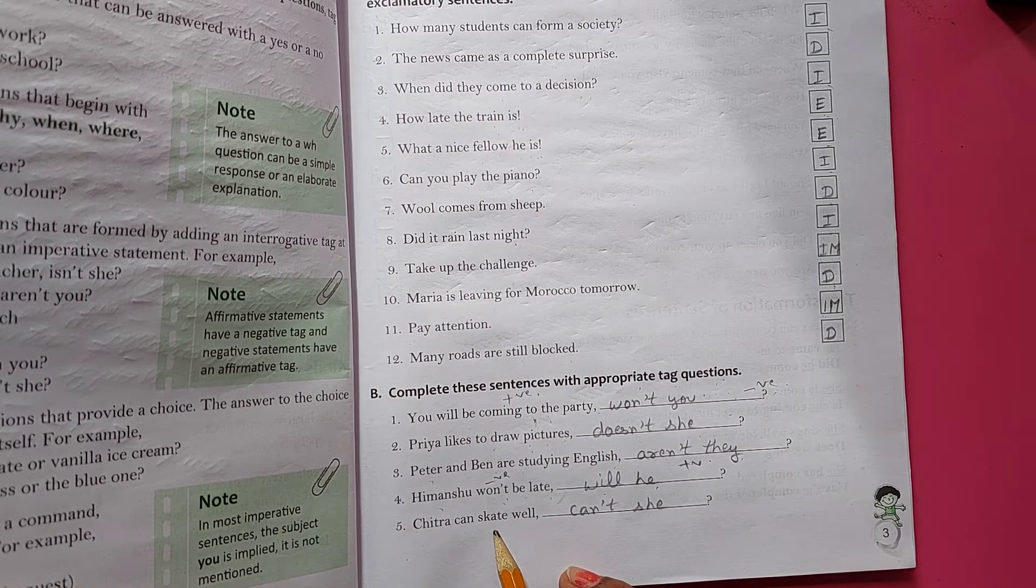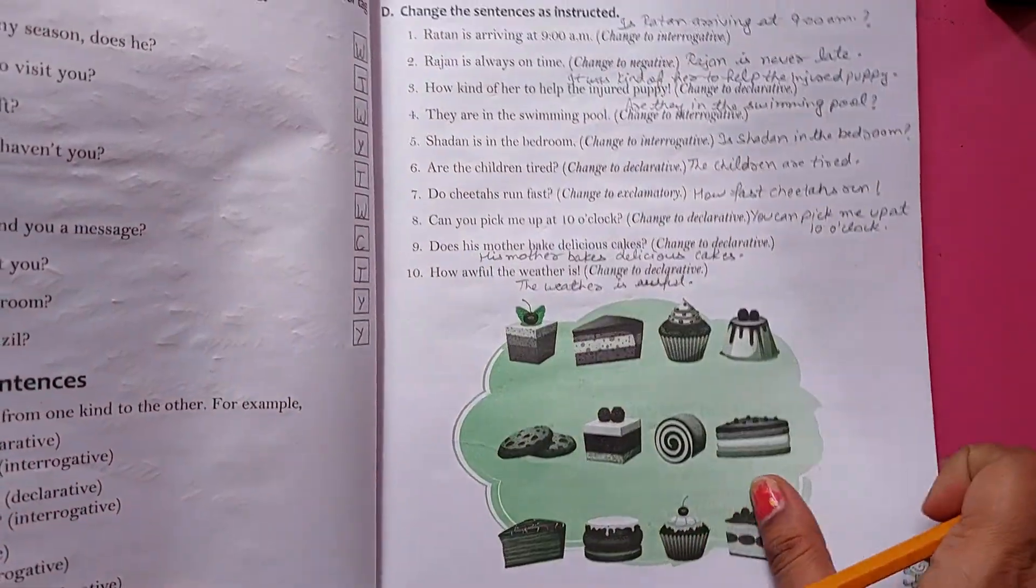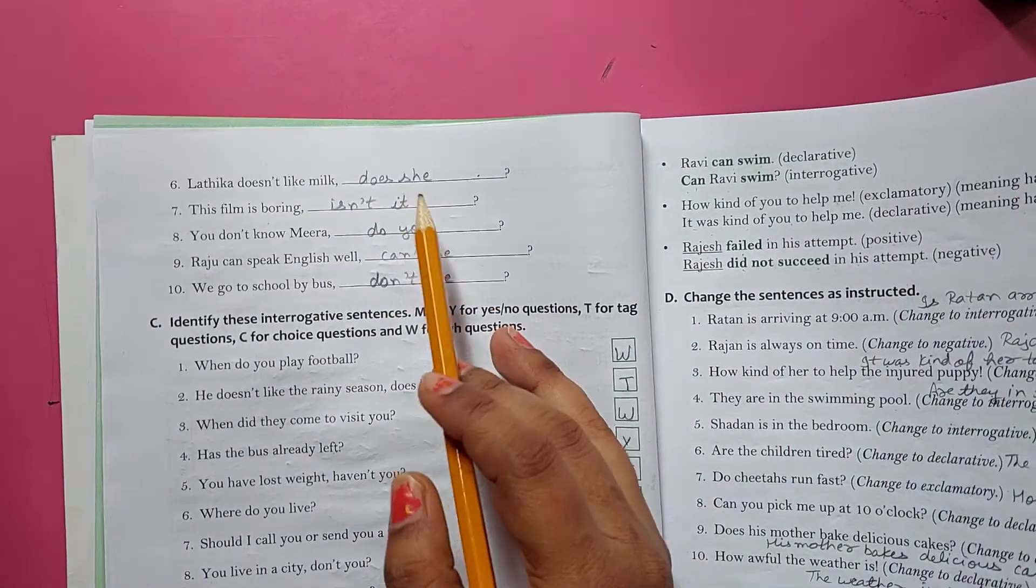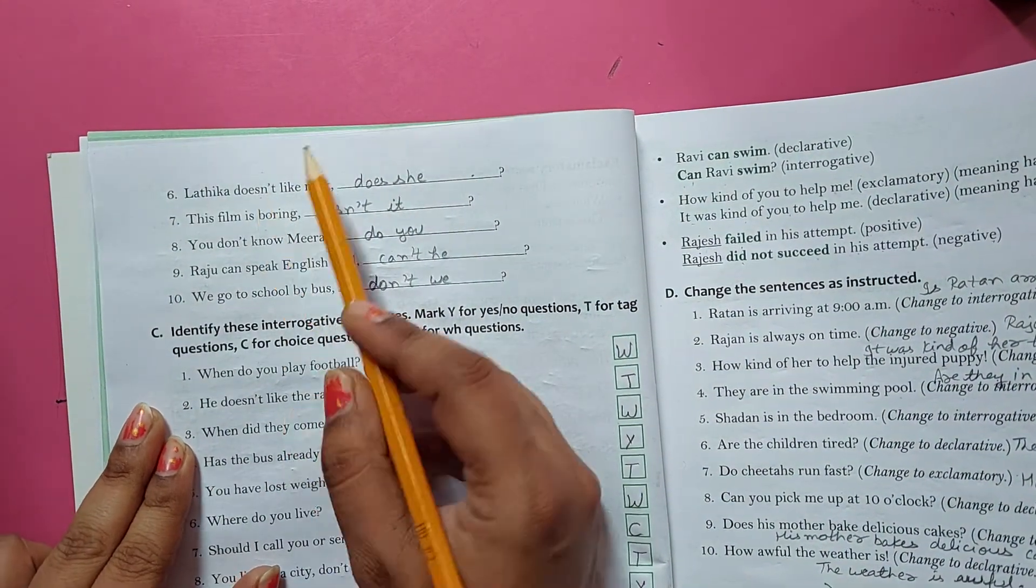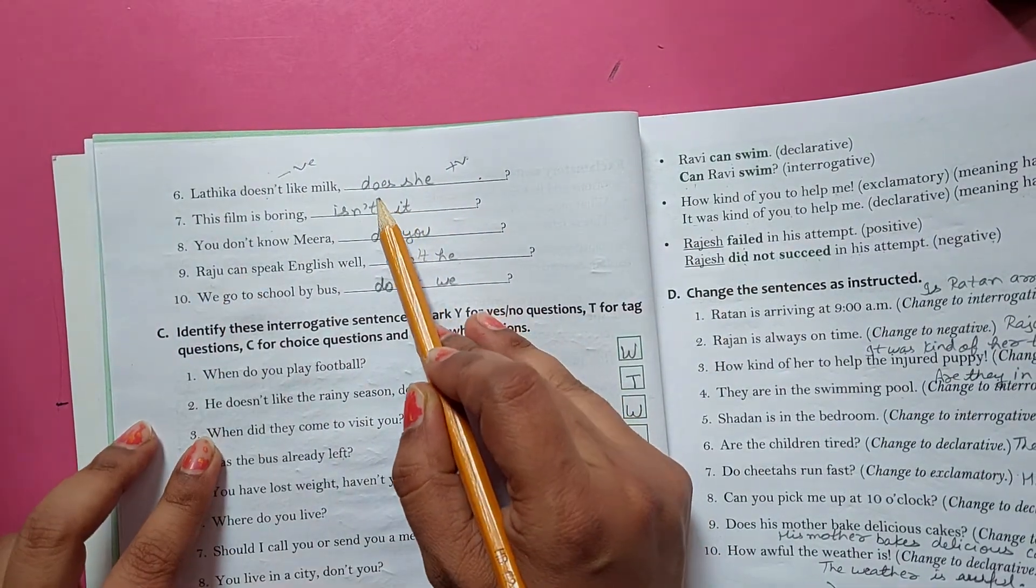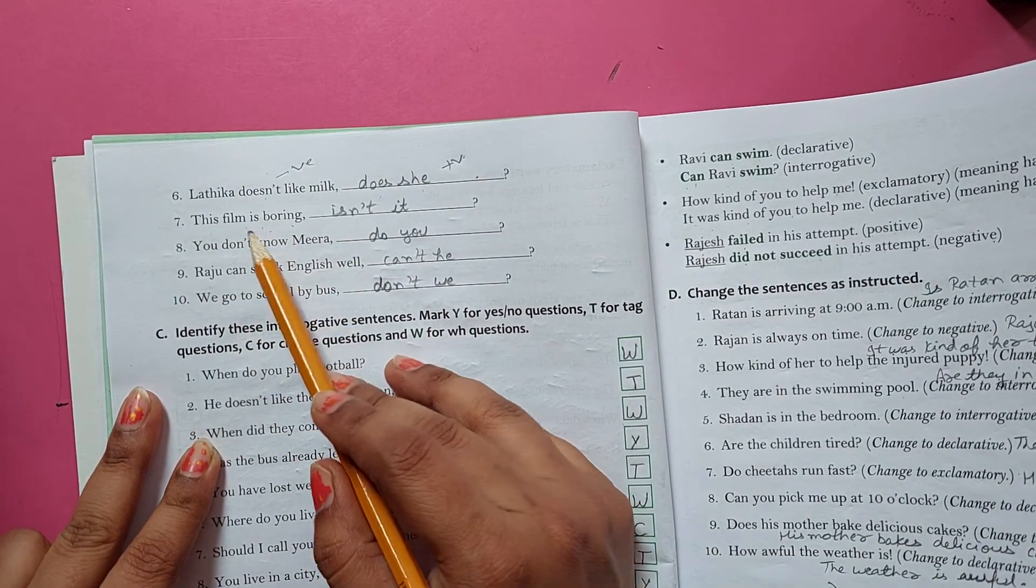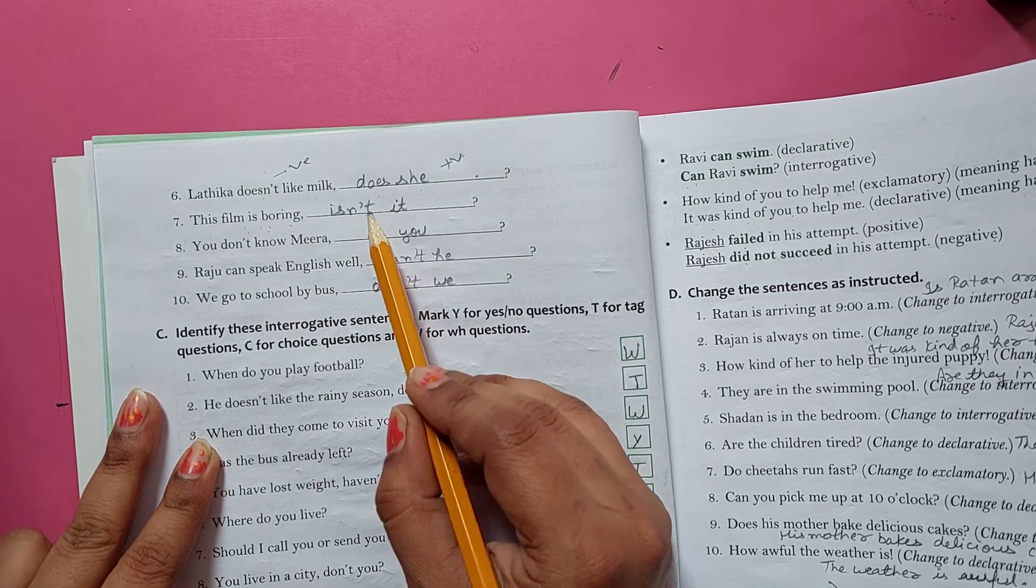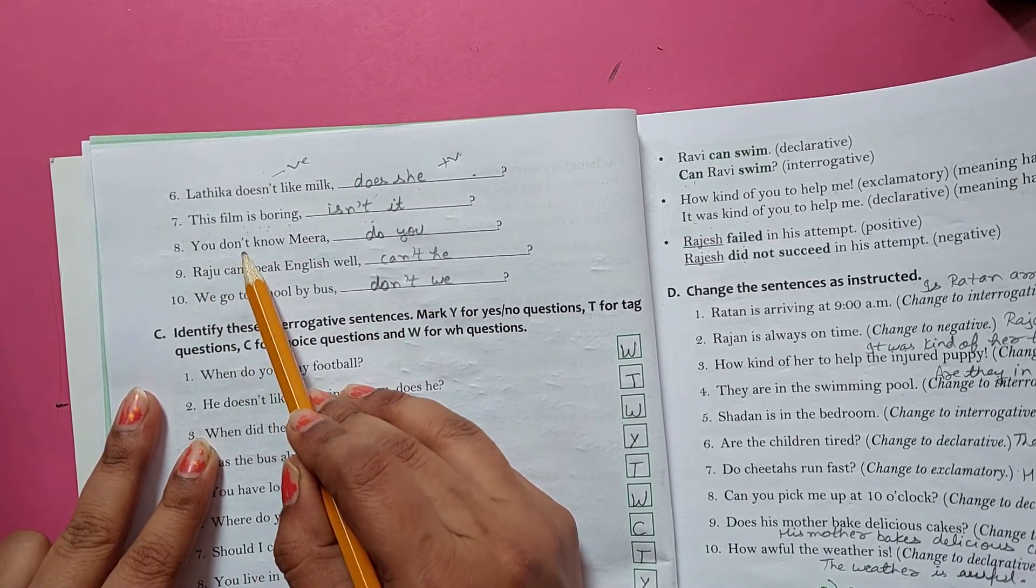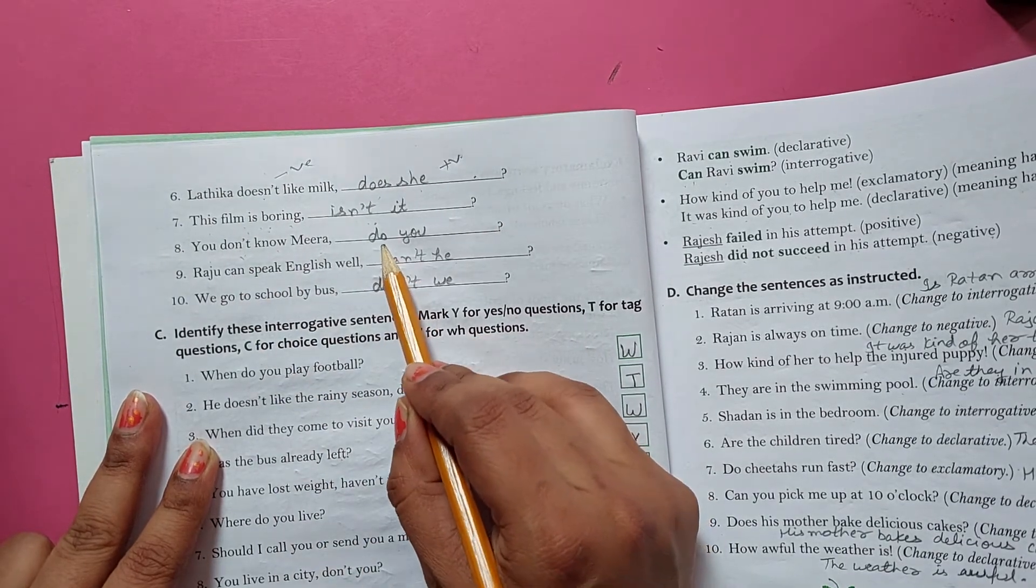Chitra can skate well, can't she? Now, Latika doesn't like milk. Yeh doesn't, yeh negative hai toh iska answer kya aayega positive mein? Positive tag question. Does she? This film is boring. Yeh positive mein hai toh iska answer negative mein. Isn't it? You don't know Mira. Yeh negative mein hai toh isko positive mein karenge. Do you?